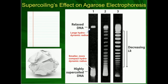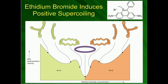You can look at the migration of the same DNA molecule through an agarose gel and get a qualitative measure of how much it was supercoiled. We'll cover ethidium bromide in the next video. Thanks for watching — make sure to like and subscribe.